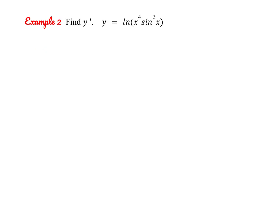Let's try another one together. We have y equals the natural log of x to the fourth times sine squared of x. To find this derivative we need to use the chain rule because we have something inside our natural log, giving 1 over (x to the fourth times sine squared of x). But then finding the derivative of the inner function requires the product rule, and we also need the chain rule for sine squared of x — so there's a lot to keep track of here.